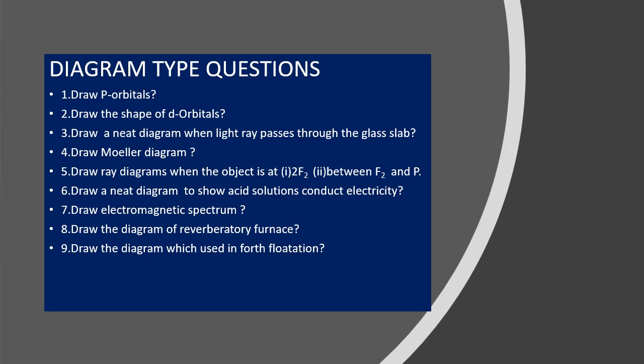Next are diagram type questions. Draw p-orbitals. Draw the shape of d-orbitals. Draw a neat diagram when a light ray passes through a glass slab. Draw the Mohr diagram. Draw ray diagrams when the object is at 2F and between F and P. Draw a neat diagram to show that solutions conduct electricity. Draw the electromagnetic spectrum. Draw a reverberatory furnace. Draw froth flotation. These are the important diagrams — you can revise them very quickly.